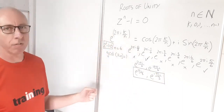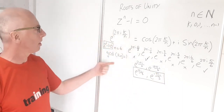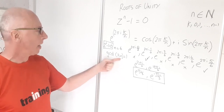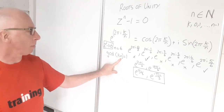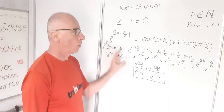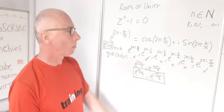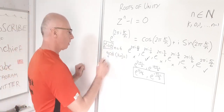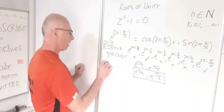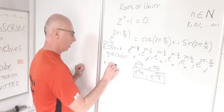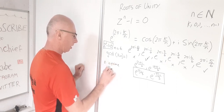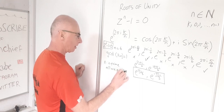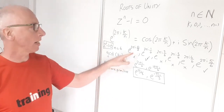One interesting characteristic: if k and n must be co-prime, then when n is a prime number, all terms will be primitive roots — so if n is prime, all roots are primitive, except for when k equals zero.